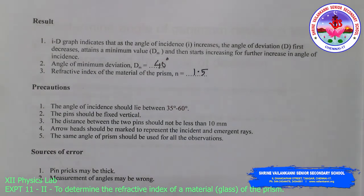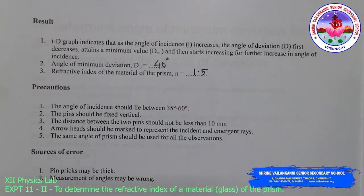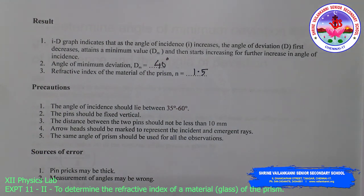Result. The graph indicates that as the angle of incidence increases, the angle of deviation d first decreases to a minimum value dm and then increases for further increase in angle of incidence. Angle of minimum deviation dm = 40°. Refractive index of the material of the prism n = 1.5.